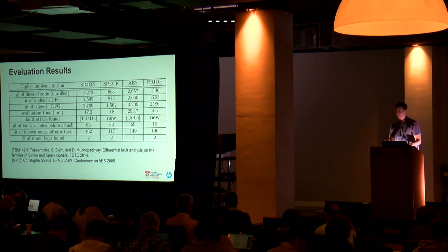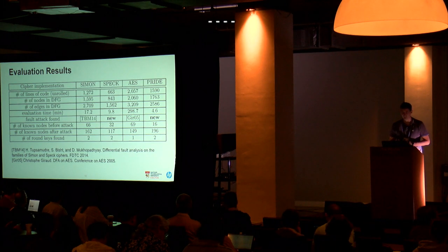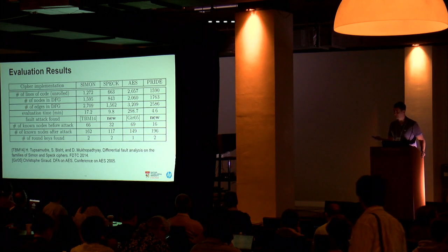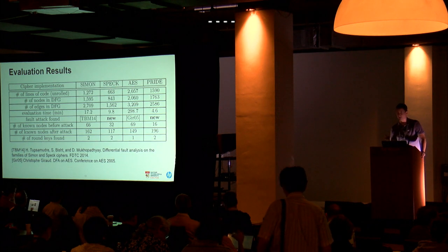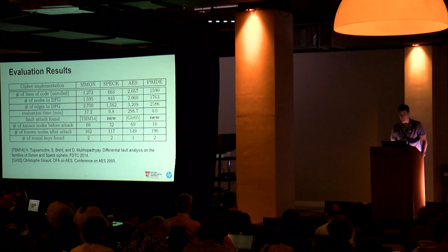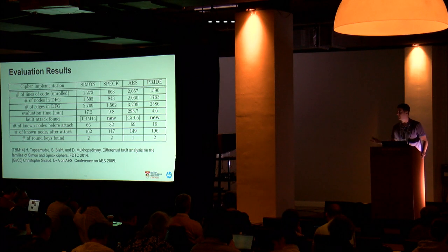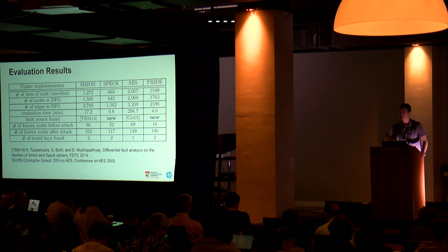Moving from a simple example to real ciphers taken from public repositories, we analyzed Simon, Spec, AES, and Pride. For lightweight ciphers Simon, Spec, and Pride, the analysis took just a few minutes; for AES, it took a couple of hours. For Simon and AES, the tool found attacks on assembly that had been published before. For Spec and Pride, we found new attacks. The attack found on Spec was particularly interesting because it exploited optimizations done in the implementation that are not visible from the cipher design. This underlines that we should always check implementations with optimizations for new vulnerabilities.